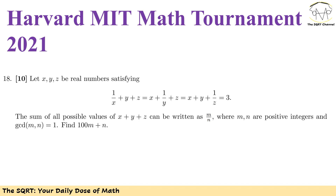We are going to write that sum as m over n. We know that m and n are positive integers, and we also know that the GCD of m and n is 1. We are going to find 100 times m plus n.